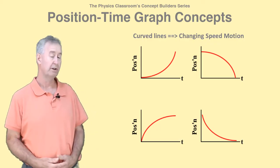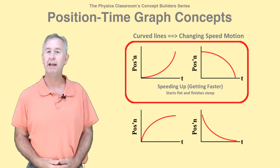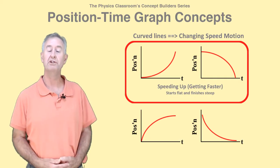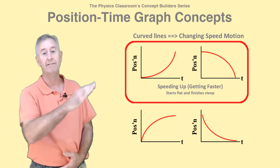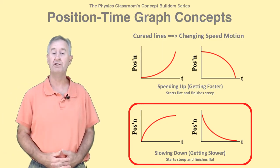Here's four curved lines. Two of these lines get steeper over the course of time. They represent an object that is getting faster, or speeding up. You know this because the curve starts flat and finishes steep.